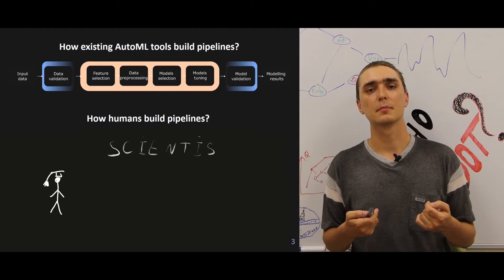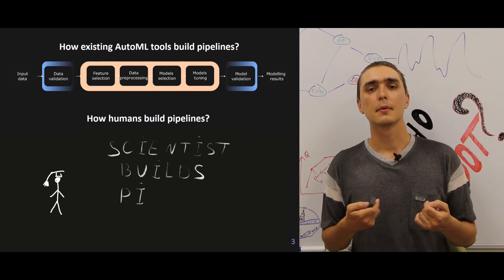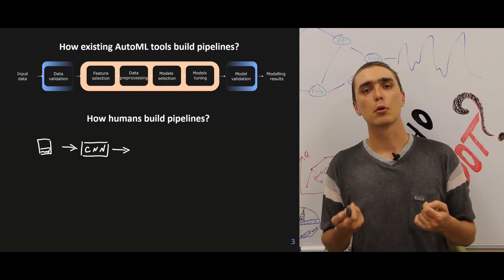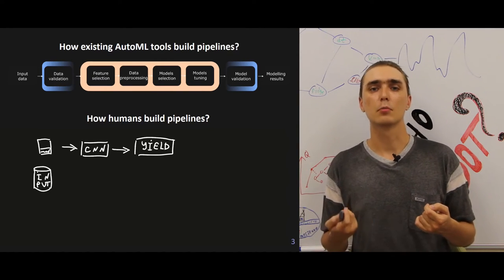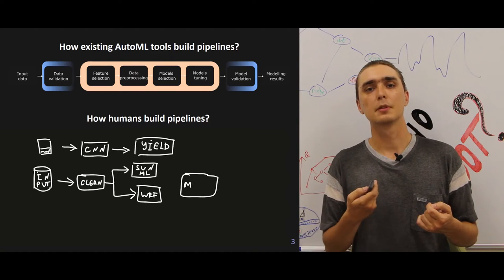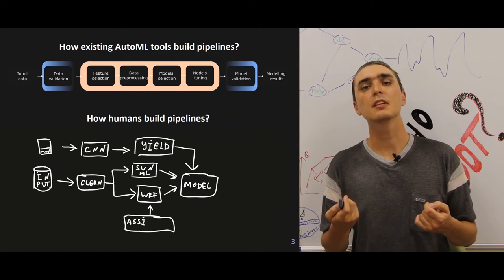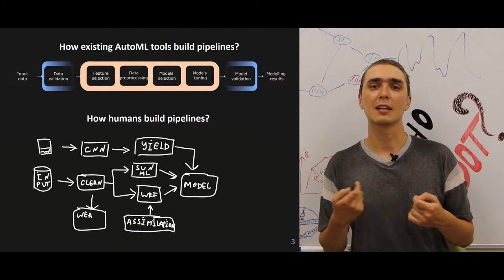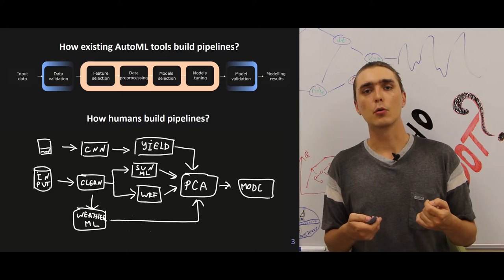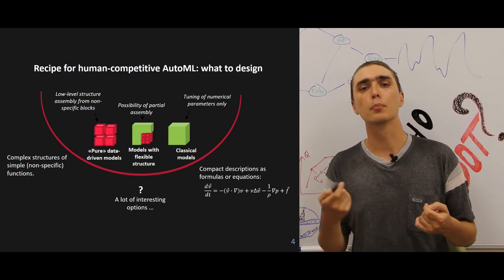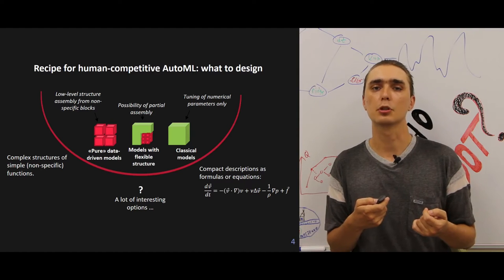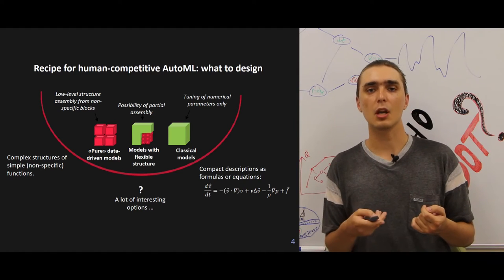At the same time, the expert-based building of composite pipelines is different. The pipelines consist of different blocks, for example, neural networks and machine learning models. And we can describe the process of expert-based pipeline building as iterative. We start from initial assumptions and continue with a set of iterations that allow improving the pipelines and achieve the appropriate quality of solution for a specific case.